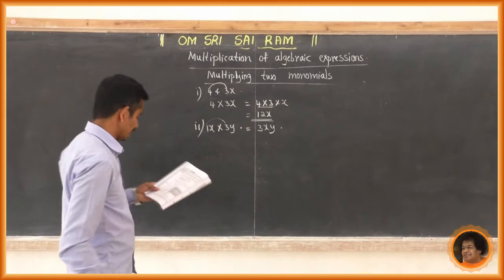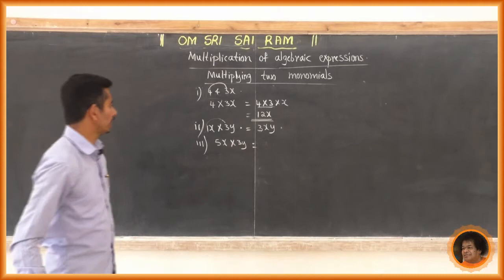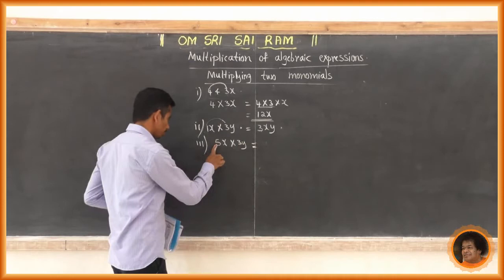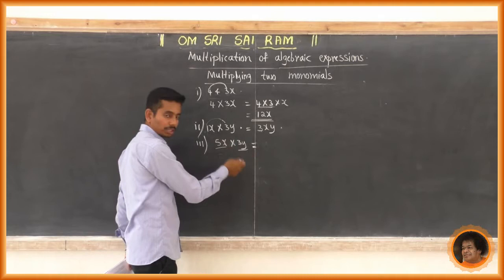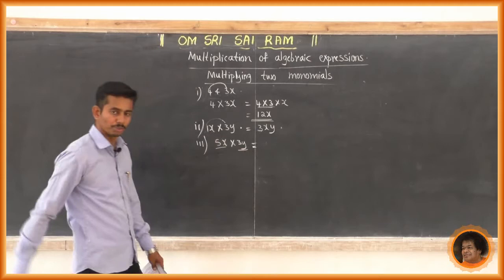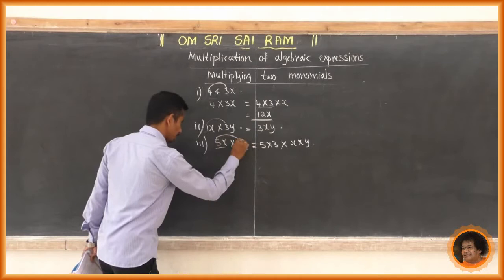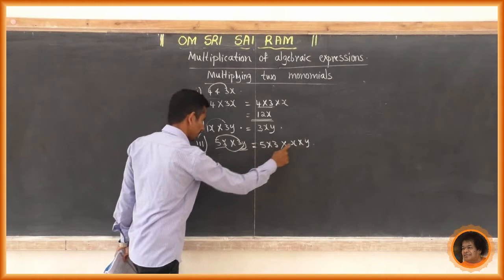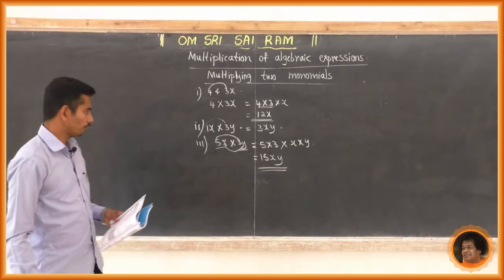Find the product of 5x and 3y. This is multiplying two monomials. First, multiply the numbers — the constants 5 and 3: 5 into 3 is 15. Then multiply the variables: x into y is xy. So 15xy is the product of 5x and 3y.